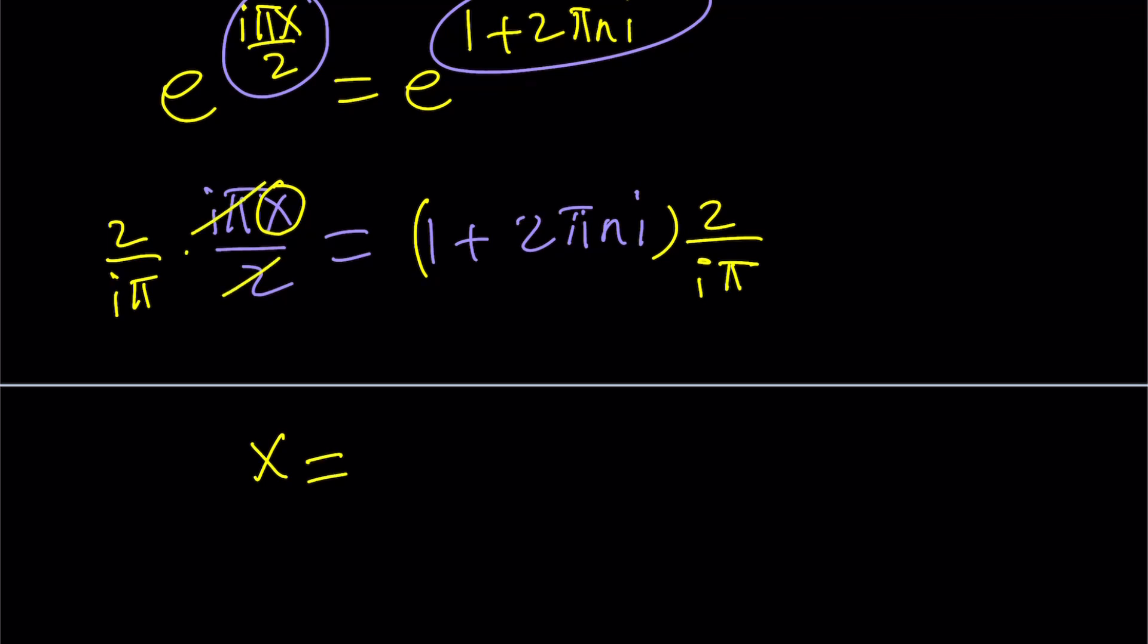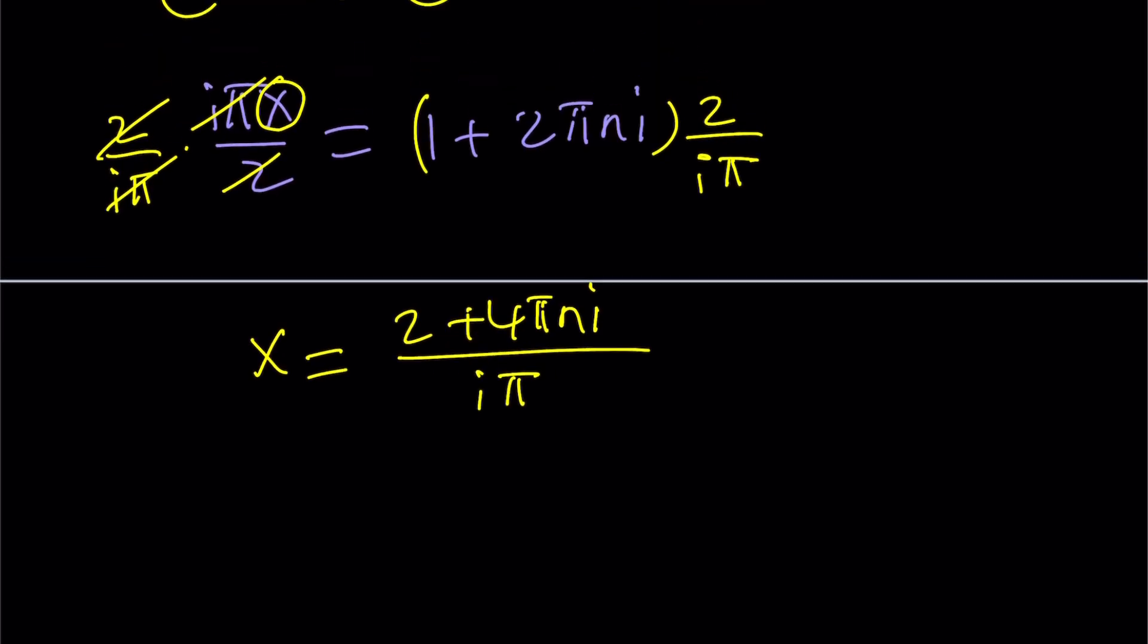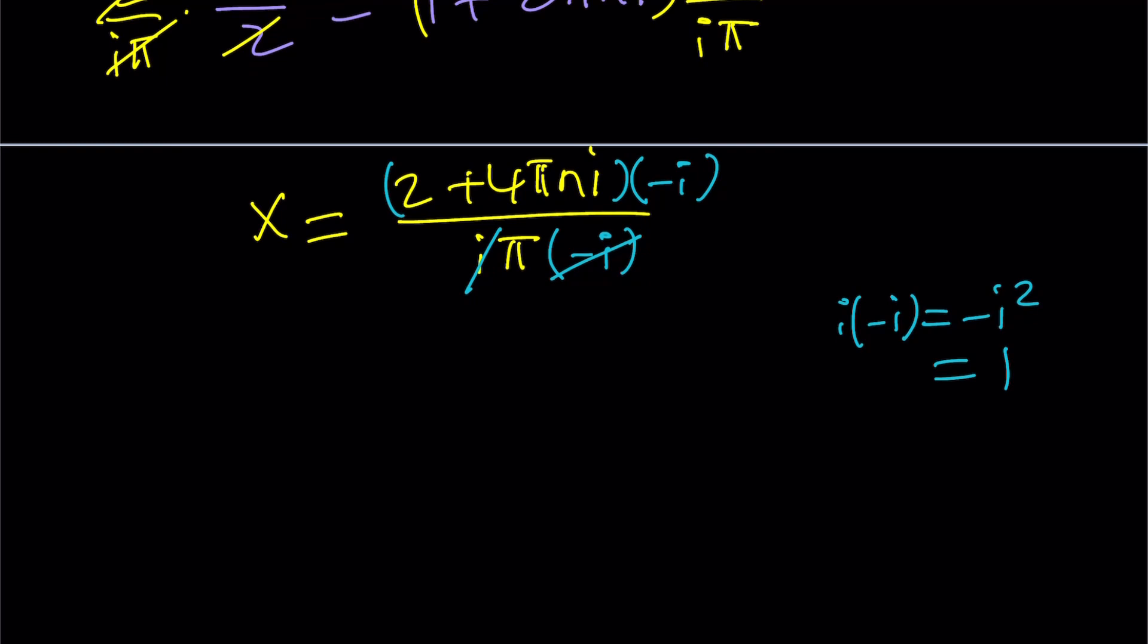So we're going to multiply both sides by 2 over i pi. And now from here, obviously, these two things are going to cancel out and we're going to end up with this. So let's distribute to 2, 2 plus 4 pi n i divided by i pi. Obviously, you don't want i at the bottom. You don't want it in the denominator. Nobody wants it, as far as I know. So let's get rid of that. A lot of times people are going to multiply it by i, but I'll multiply it by negative i. Why? Because i times negative i is negative i squared. Let's do it here. And i squared is negative 1, so negative i squared is positive 1. So these two make a positive 1. Isn't that great? So we got rid of the i totally. No negatives at the bottom. I don't like that.